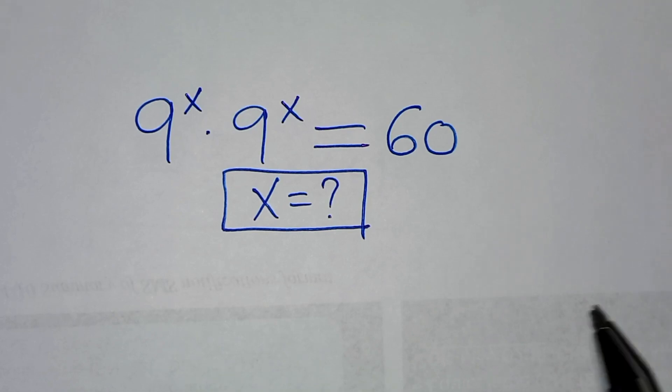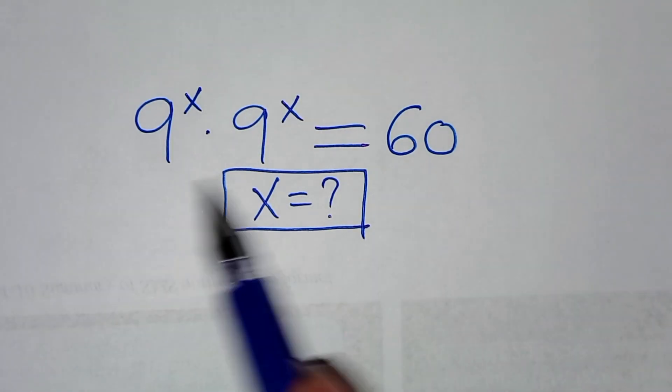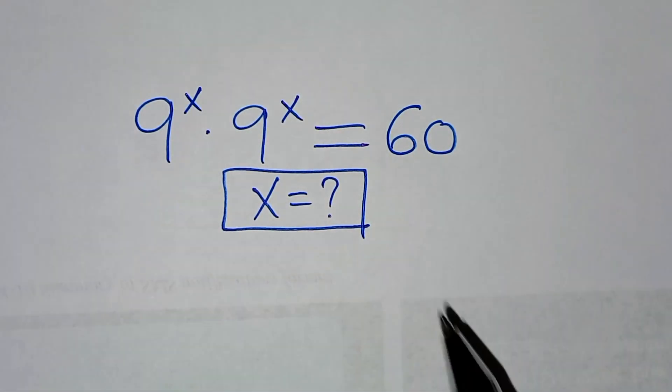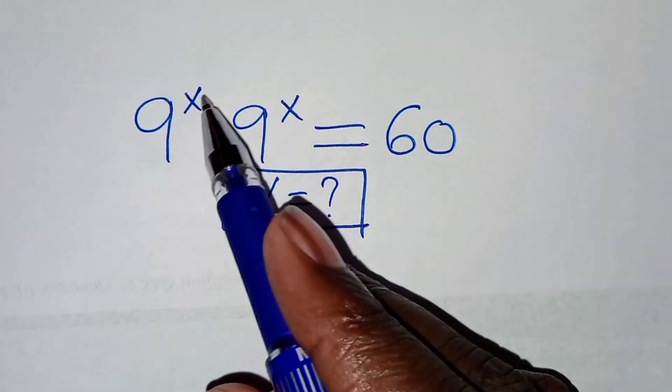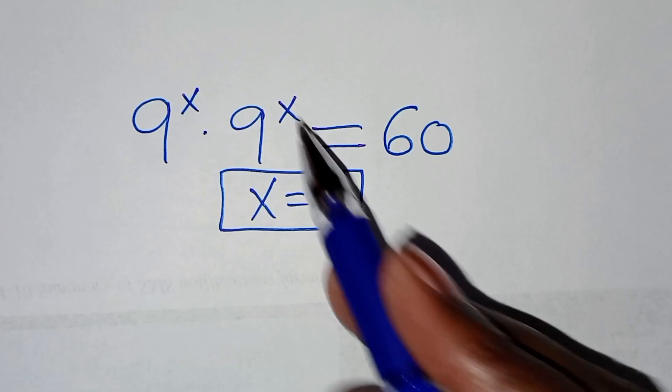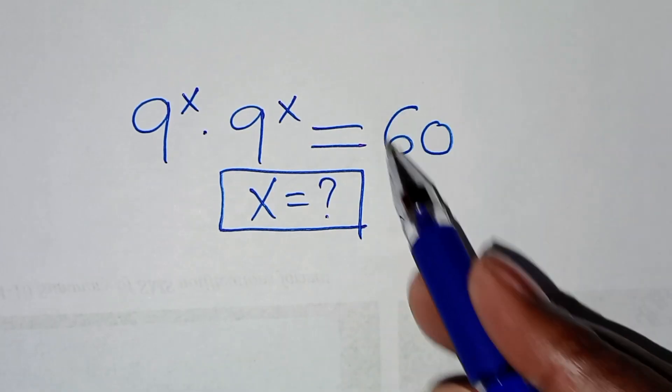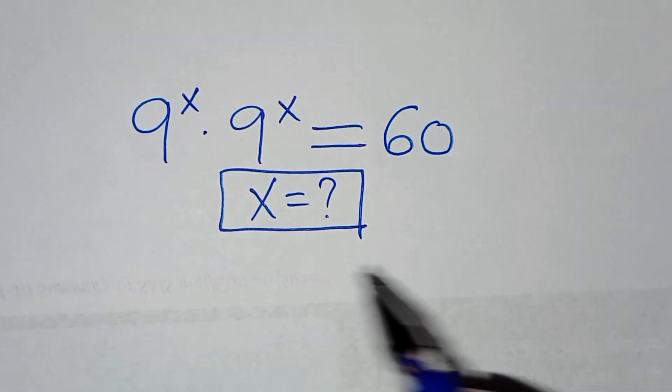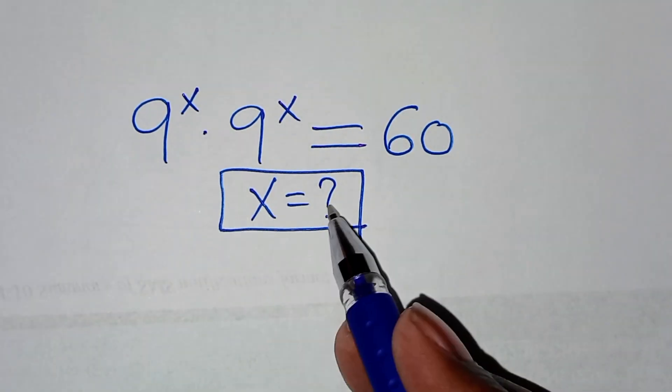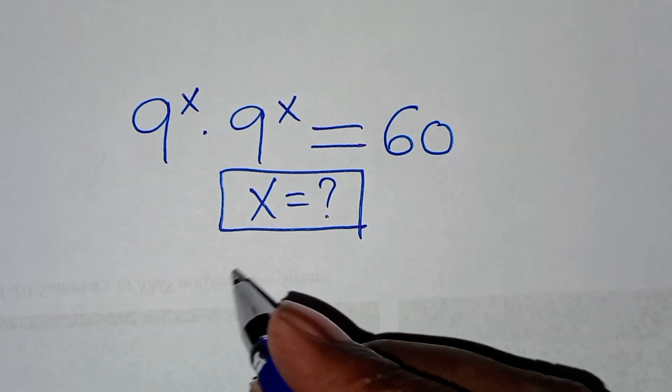You are welcome to solve this nice exponential equation, which is 9 to the power x times 9 to the power x. This is equal to 60. So, what is the value of x?